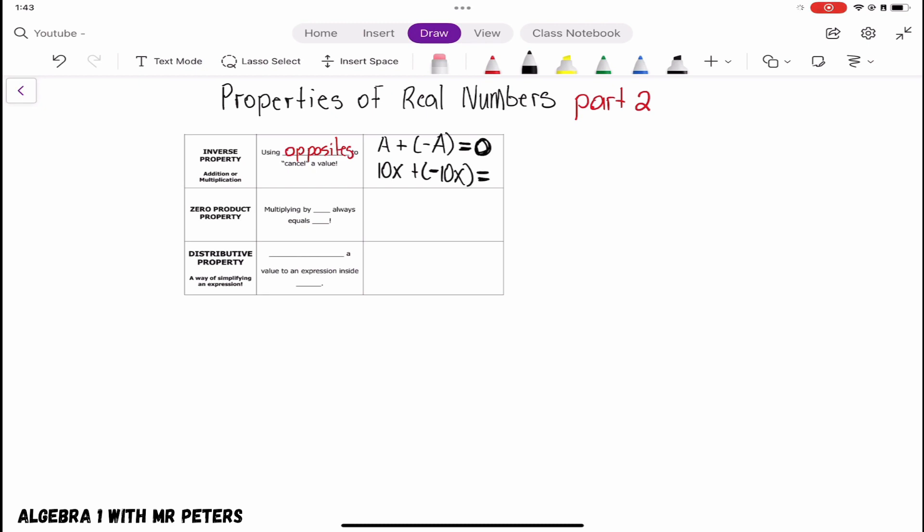Now when we talk about the inverse property of multiplication, the rules are just a little bit different. With the multiplication side, what we're seeing is that the product of a number and its multiplicative inverse, its reciprocal, is always going to be one.